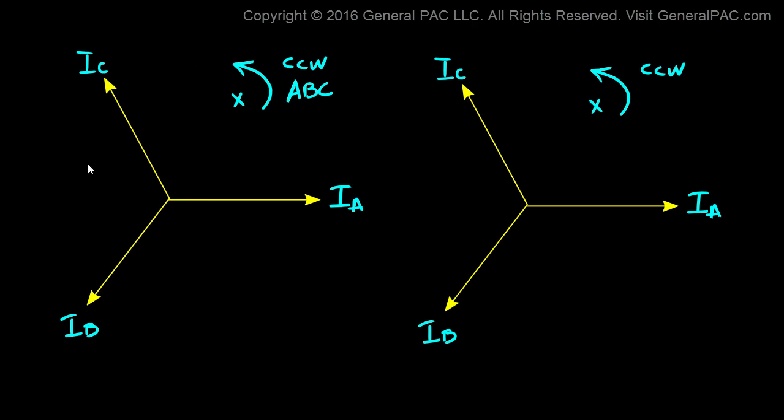I've made a carbon copy of this and put it here. We also said that if we swap IB with IC, then this effectively makes it an ACB system. So the difference between ABC and ACB is simply how these phasers relate to one another.